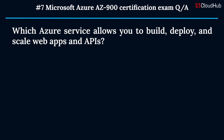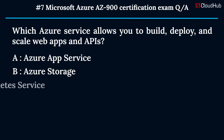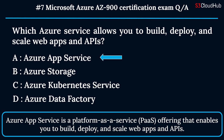The seventh question: which Azure service allows you to build, deploy, and scale web apps and APIs? Option A: Azure App Service. Option B: Azure Storage. Option C: Azure Kubernetes Service. Option D: Azure Data Factory. The correct answer is option A: Azure App Service. Azure App Service is a platform-as-a-service offering that enables you to build, deploy, and scale web apps and APIs.